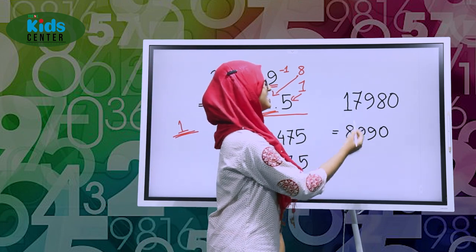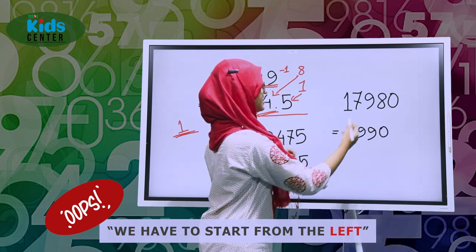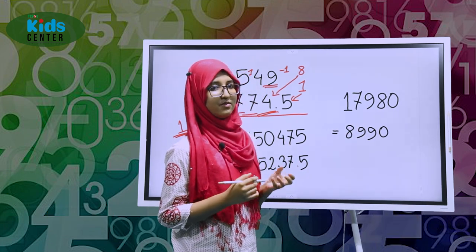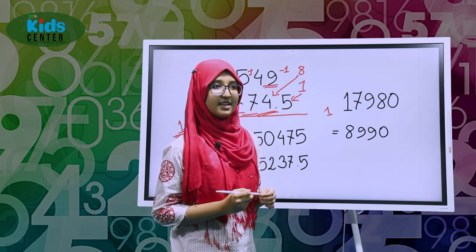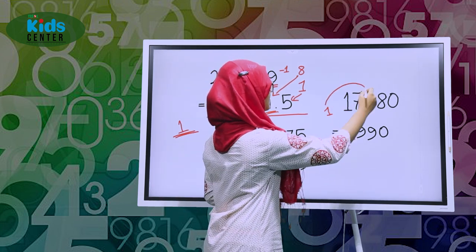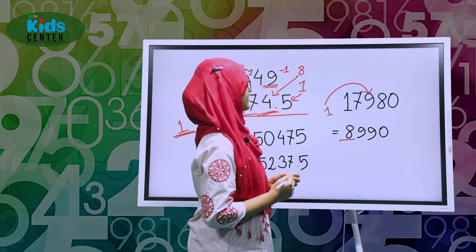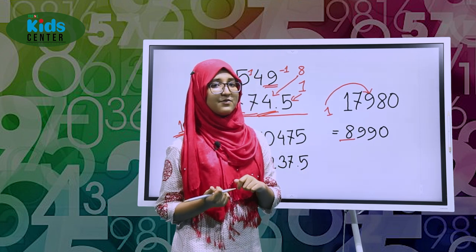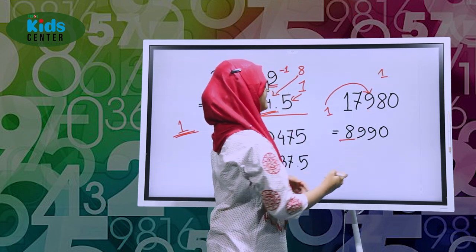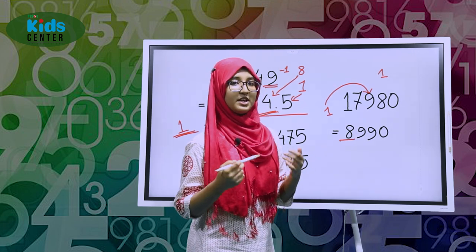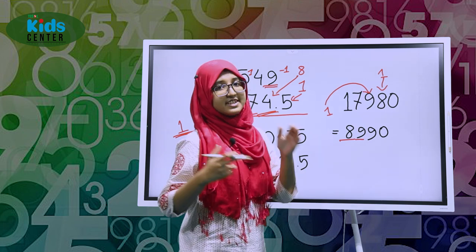Here we go — 17,980. We start from the left. 17 is an odd number, so we make it even and get 16, holding 1. 16 divided by 2 is 8, so we write 8. This 1 adds with 9 to make 19. 19 is also an odd number — subtract 1 to get 18. 18 divided by 2 is 9, so we write 9.